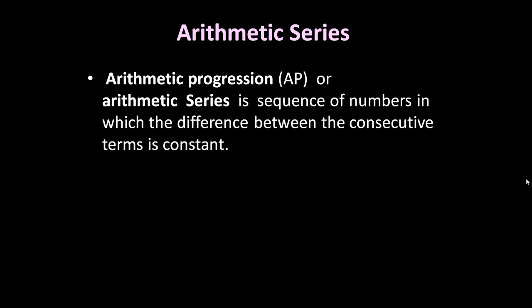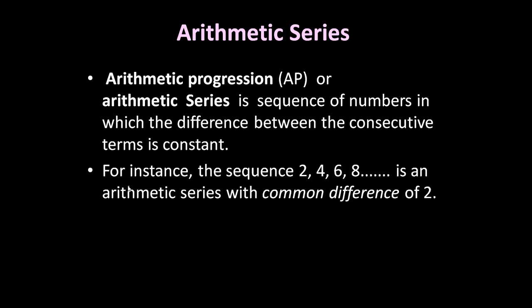Arithmetic progression, also known as AP or arithmetic series, is a sequence of numbers in which the difference between consecutive terms is constant. For example, the sequence 2, 4, 6, 8 is an arithmetic series with a common difference of 2. If you see: 4 minus 2 is 2, 6 minus 4 is 2, 8 minus 6 is 2. So for every two consecutive terms, the common difference remains the same.